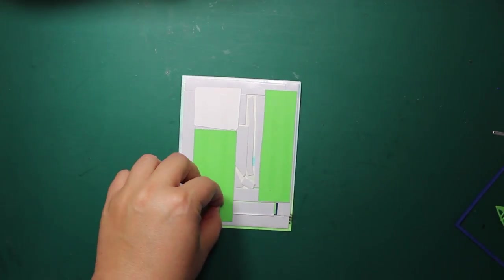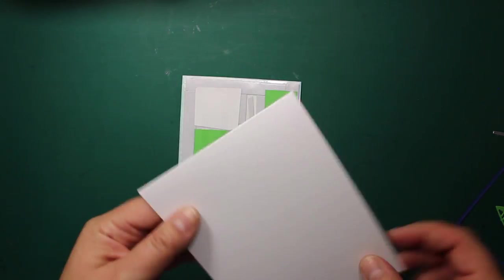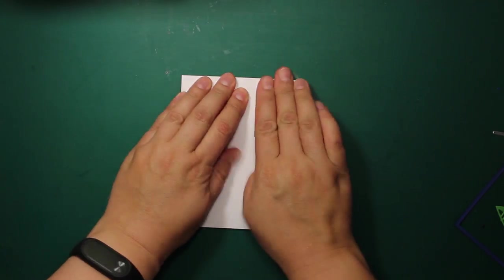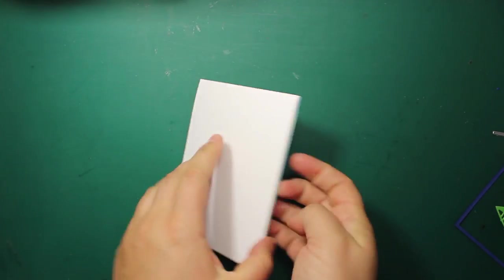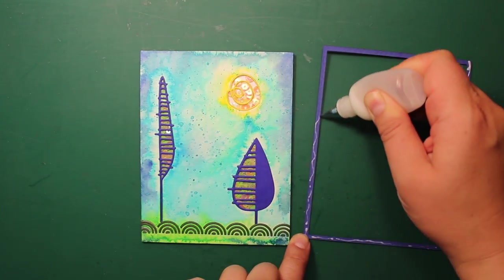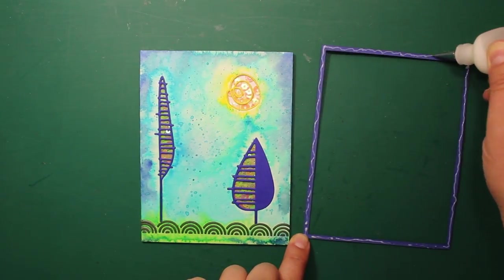Then I'm applying more adhesive onto the cardstock and sticking my card base on top. The next step is sticking down the frame.